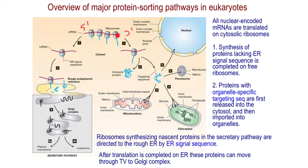This ribosome has a polypeptide which is much longer than this one, meaning it has moved along and made this polypeptide, while this ribosome just attached and has a shorter amino acid sequence. Messenger RNA can be simultaneously read by multiple ribosomes — this is not the same ribosome in different stages. There are multiple ribosomes attached to the messenger RNA producing polypeptide simultaneously.